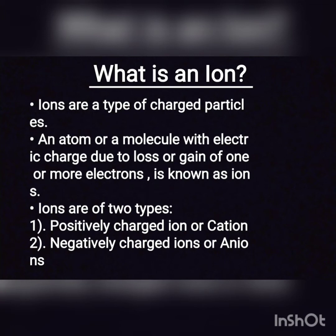Now we will learn what an ion is. We can think of an ion as a charged atom or charged molecule. Ions are a type of charged particle. The question arises: how do atoms or molecules become charged particles? As we know, atoms contain electrons, protons, and neutrons, and atoms are highly unstable. Atoms always combine with other atoms. While combining, atoms sometimes lose electrons and sometimes gain electrons from other atoms. Due to this gain or loss of electrons, a charge appears on the atom, and it becomes a charged particle — which we call an ion.